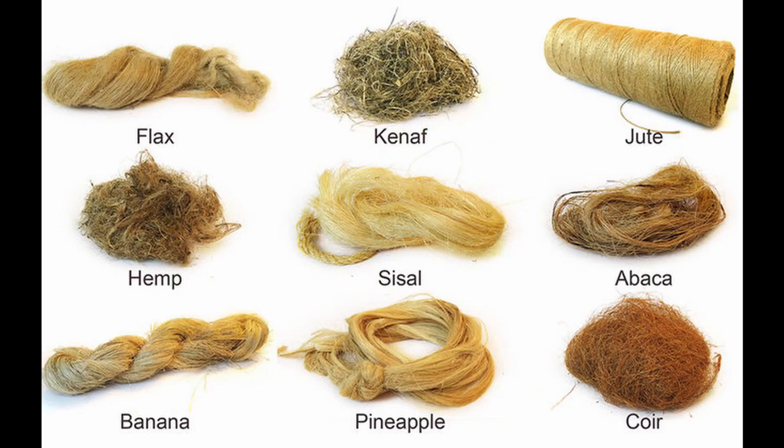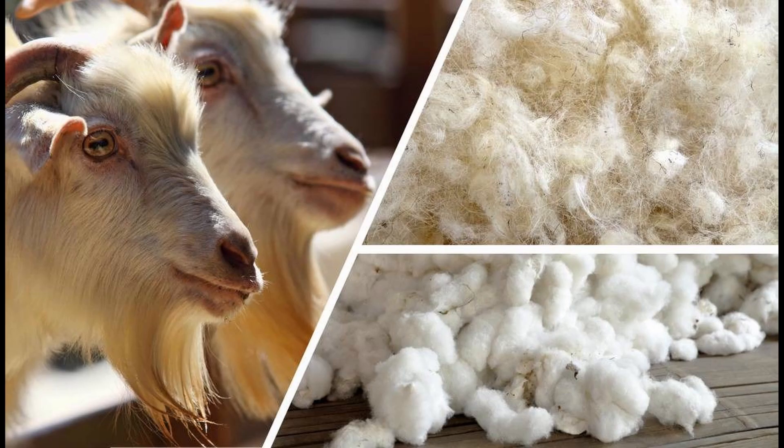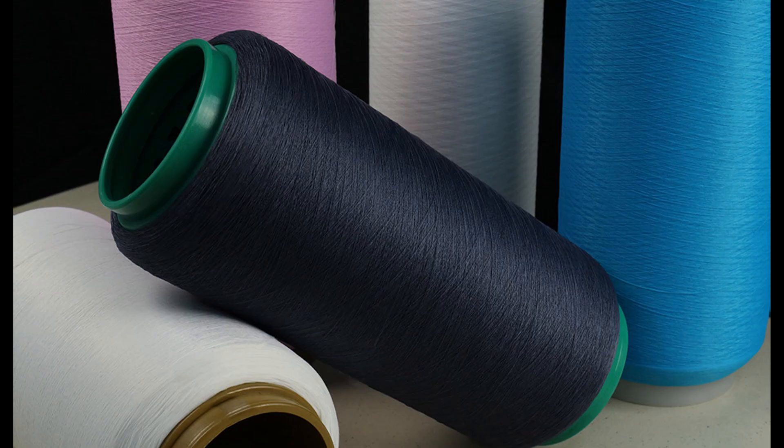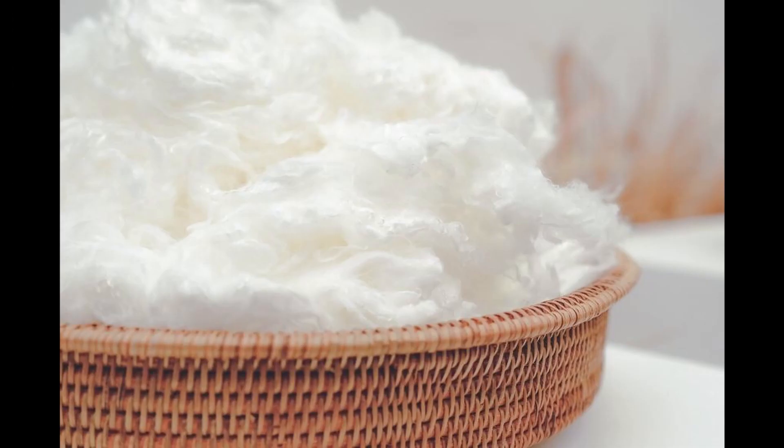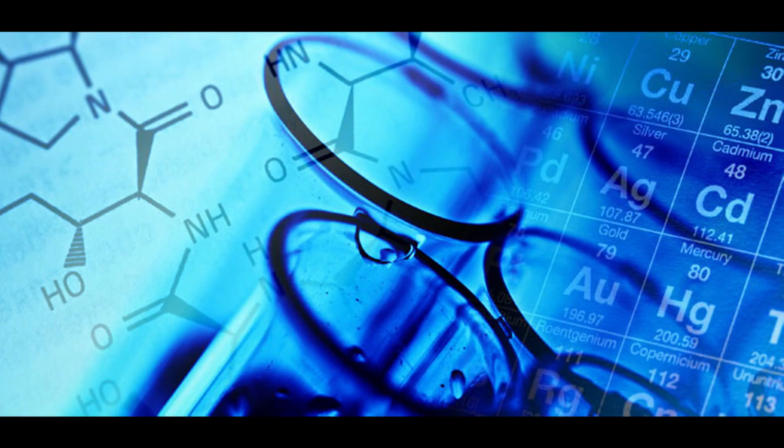Dyeing textiles is very difficult since we deal every day with vegetable fibers such as cotton, animal fibers such as wool, synthetic fibers such as polyester, or artificial fibers such as viscose. All these fibers are completely different from each other — they have different chemical structures and different performances. So, how can we dye these garments?